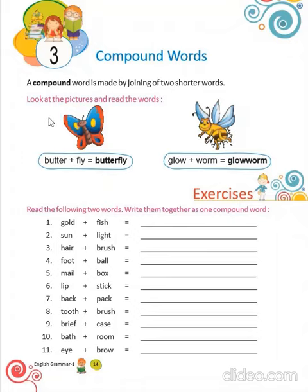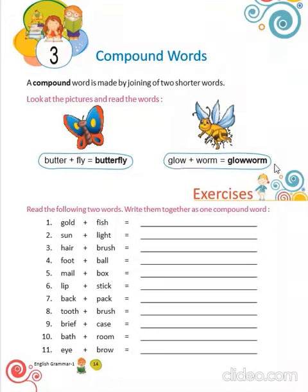Like this — what is this? Butterfly. So, a butterfly will be formed by joining two words: butter and fly. Now, what is this? This is a glowworm. How will glowworm be formed? It is formed by joining two words: glow and worm. Glowworm.